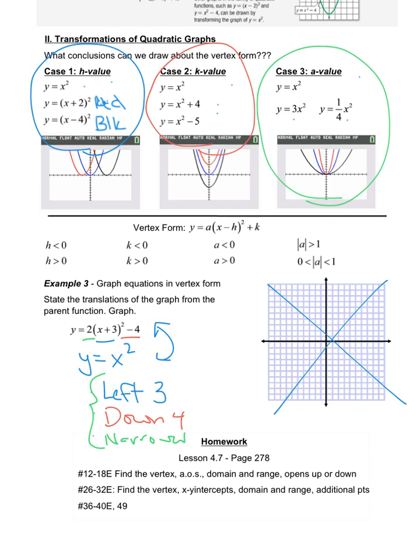If you have any questions, feel free to ask me in class. As far as things go, our homework's on the bottom. Make sure to find the vertex, axis of symmetry, domain range, and whether our graph opens up or down for 12 through 18. Find the vertex, x and y intercepts, domain and range, and additional points, if need be, on 26 through 32. And then obviously, you have this last set of problems. Hopefully, you have enough time in class today to finish. We can ask questions tomorrow on our review day. Take care.